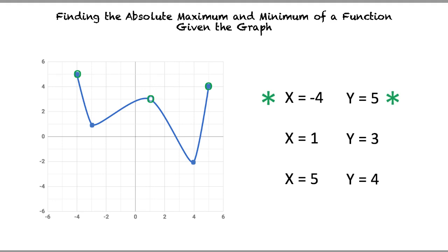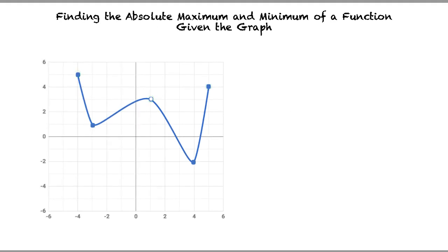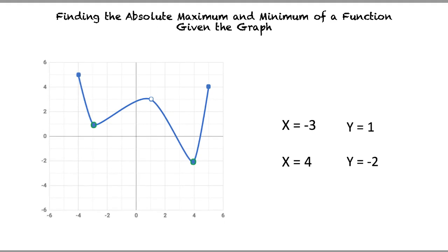You've got it. Now let's finish the problem by finding the absolute minimum. There are two low points on the function at the coordinates negative 3 and 1, and 4 and negative 2. The lowest y-value is located at 4 and negative 2, so the absolute minimum is at x equals 4.